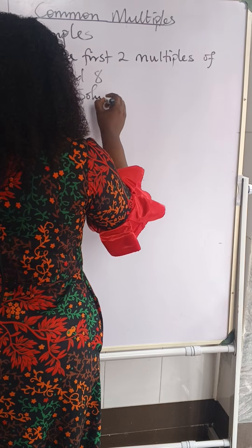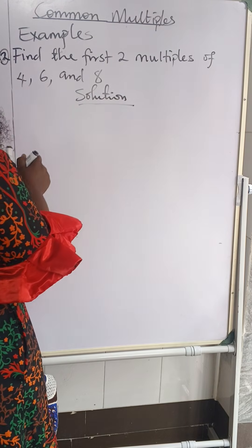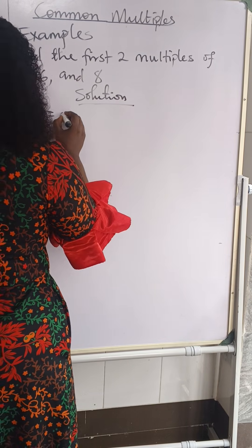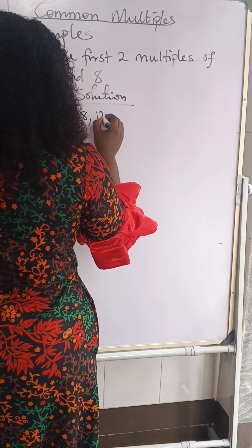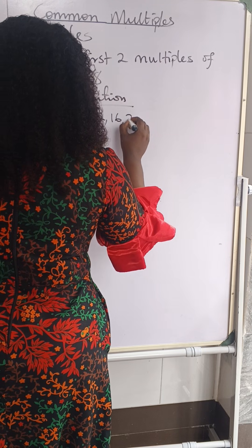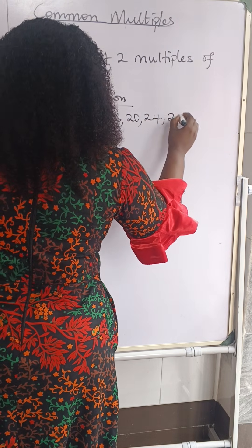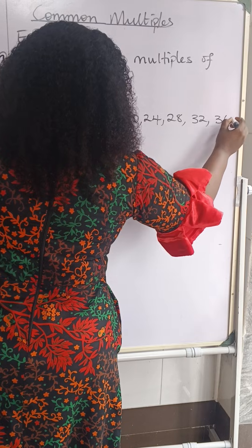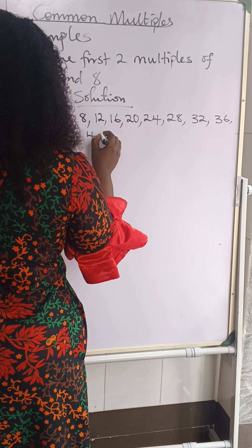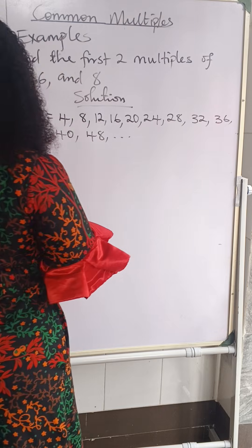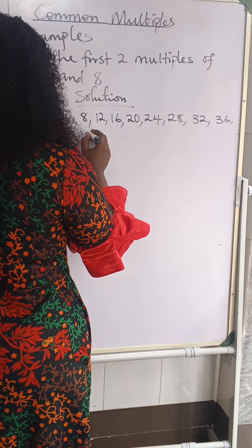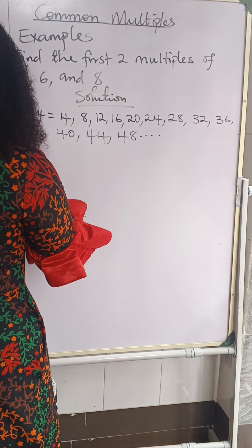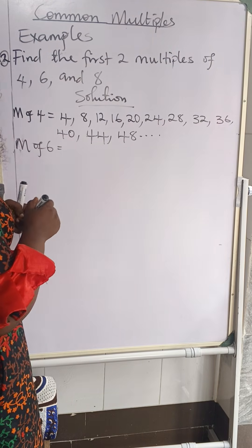Solution for four, six, and eight. Multiples of four — counting in fours: four, eight, twelve, sixteen, twenty, twenty-four, twenty-eight, thirty-two, thirty-six, forty, forty-four, forty-eight, and so on.